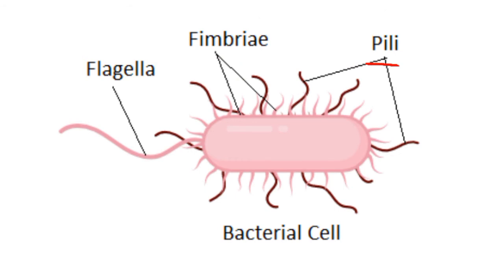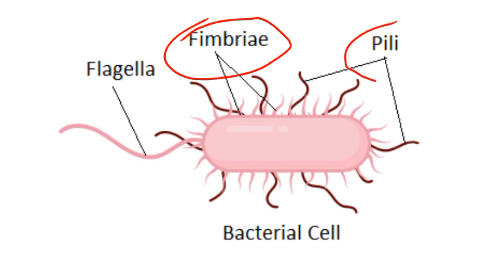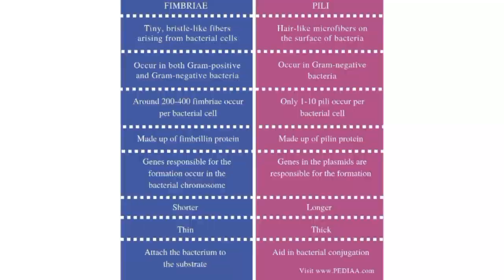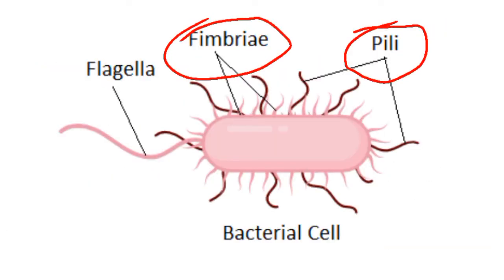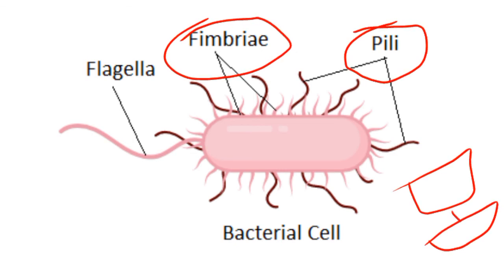Now let's move toward the functional differences. The function of fimbriae is the attachment of bacteria to the human cell, while the function of pili is bacterial conjugation. What is bacterial conjugation? Conjugation is the meeting of two bacterial cells. For example, these two bacterial cells are connected with the help of sex pili, and then DNA is transferred from the donor bacterium to the recipient — this is called conjugation. So the function of pili is bacterial conjugation.